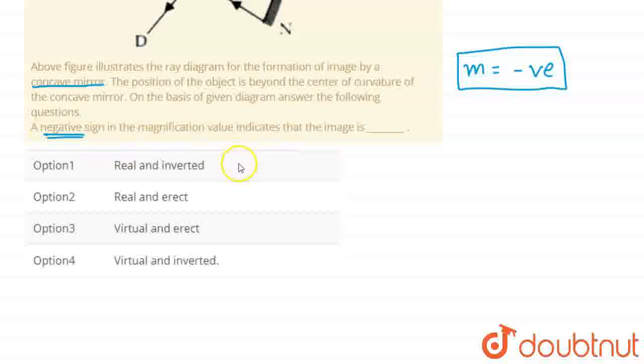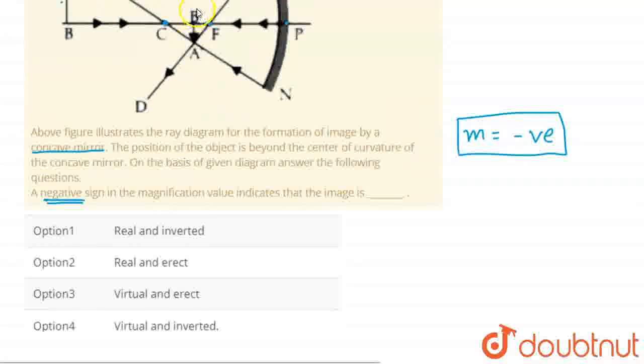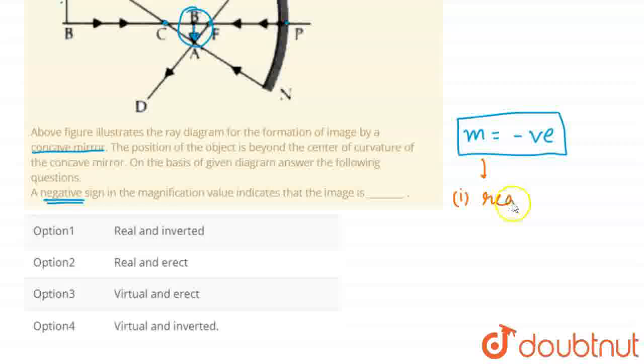So what does that mean? We can see from the diagram that negative magnification means the image formed will be inverted, and it will be real.